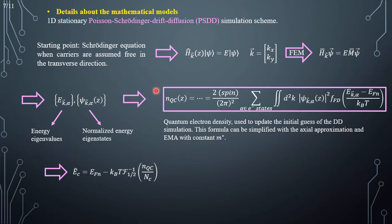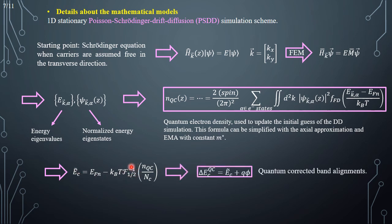Once the quantum corrected charges are available, it is possible to obtain the quantum corrected band edges by inverting the Fermi integral of order one half. Since we have computed the quantum corrected band edges without touching the electrostatic potential, in order to obtain coherent results we have to change the band alignments. This can be done by exploiting the formula shown here, from which we finally derive the quantum corrected band alignments to be plugged into the simulator.